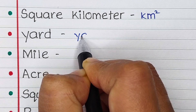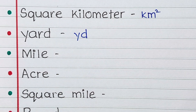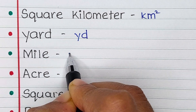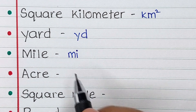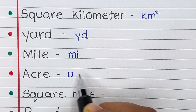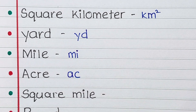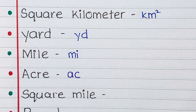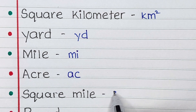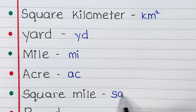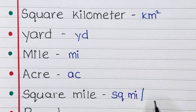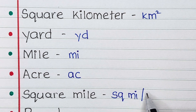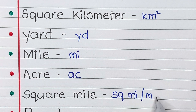Next is yard. It is written as small y and small letter d. Next is mile. Mile is written as m i. Next is acre. Acre is written as ac. Next is square mile. Square mile is written as sqmi or small m, small i to the power 2.